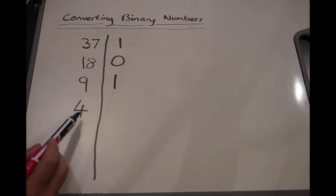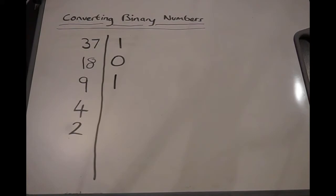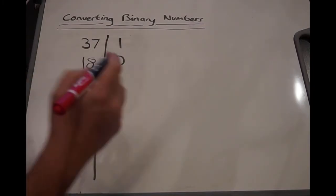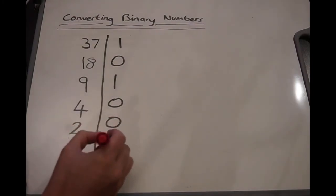How many times does 2 go into 4? It goes twice, and it leaves a 0. And we're getting down to the business end here. So how many times does 2 go into 2? Well, it goes once, and leaves nothing. And then finally, because we've got a 1 left over here, so how many times does 2 go into 1? Well, it goes 0 times. It doesn't go in at all, obviously. And then we put a 1 up here, because we've got 1 left.